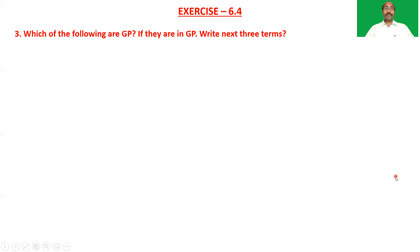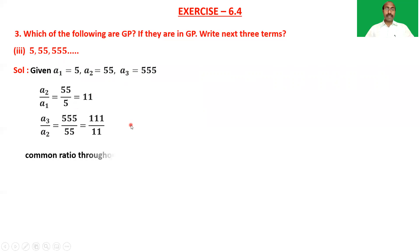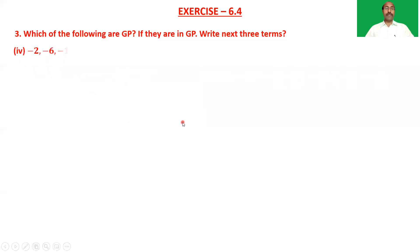Third sequence: 5, 55, 555, and so on. a₁ = 5, a₂ = 55, a₃ = 555. a₂/a₁ = 55/5 = 11 and a₃/a₂ = 555/55 = 111/11, which is not equal to 11. Since the common ratio is not the same, the given terms are not in GP.